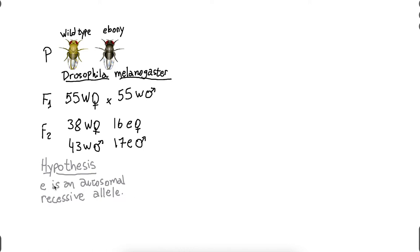All right, so my hypothesis is that ebony is an autosomal, that means it is not dependent on sex, it is not related to a sex chromosome like X or Y, and it is recessive, that means it can only be expressed when there is no dominant allele. And we are going to test this with a chi-square test.